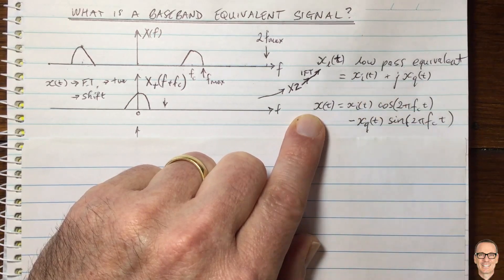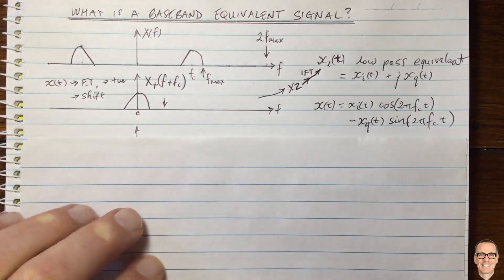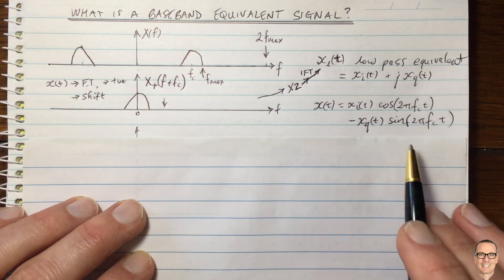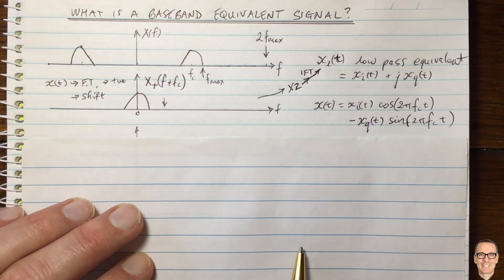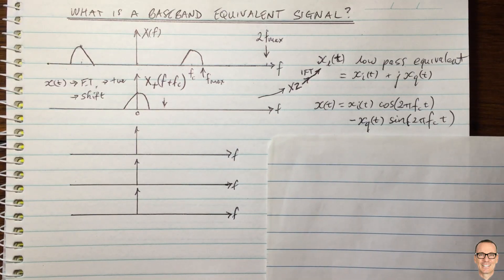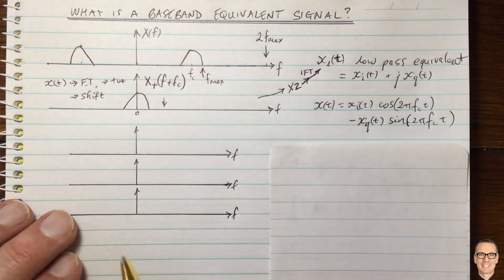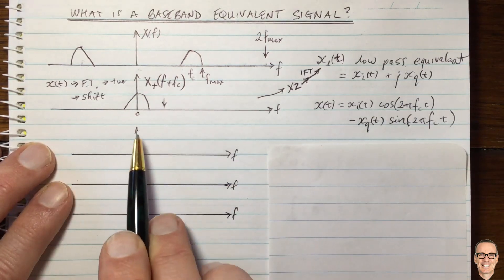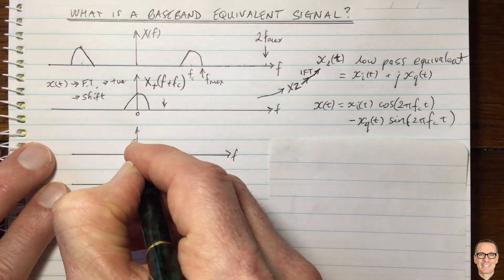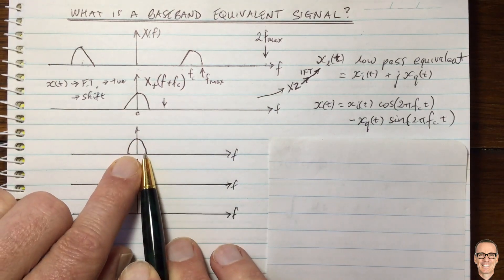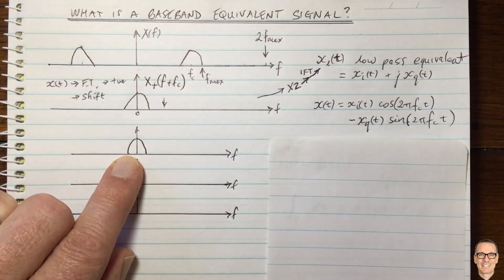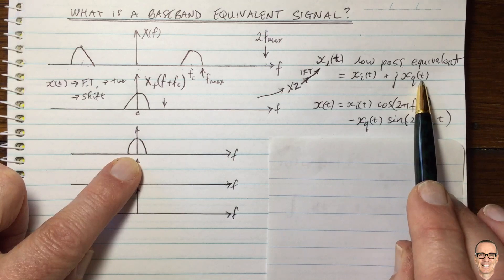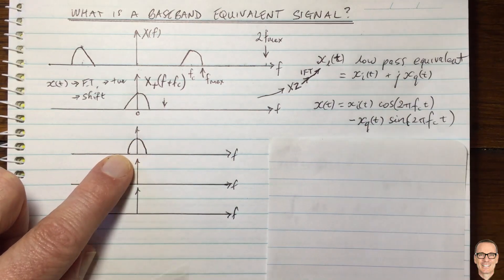Let's look at a practical example, starting with the case where we have just a real component in the baseband — so XQ equals zero because the spectrum is symmetric. We're going to do the reverse process: start with a baseband signal and see how we produce the passband signal. So if we take a baseband signal that is real, it's only XI(t), and XQ equals zero in this case because it's symmetric.